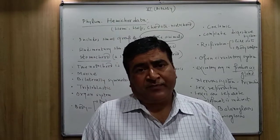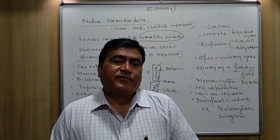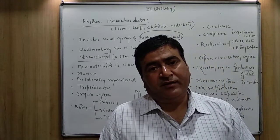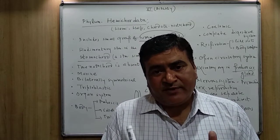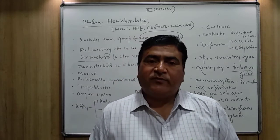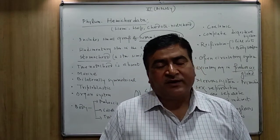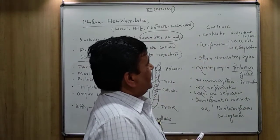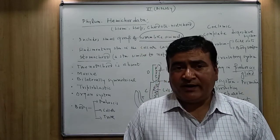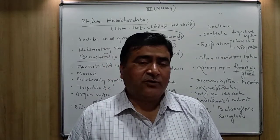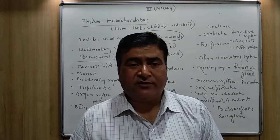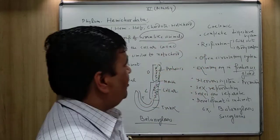As far as the body cavity is concerned, the animals in this phylum are coelomates — the body cavity is found. The coelom is the body cavity that lies between the gut and body wall. In this case also, the coelomic cavity is found, and that's why the animals are called coelomates. As per the digestive system, it is complete — meaning it has two different apertures: mouth and anus. The mouth helps to intake food and the anus helps to eliminate undigested food materials. The alimentary canal is complete.